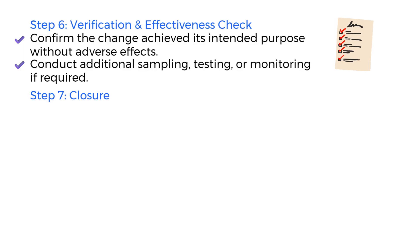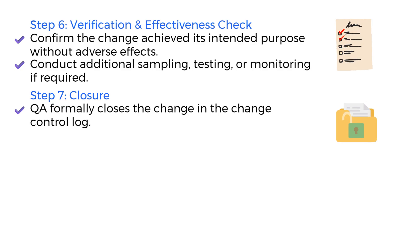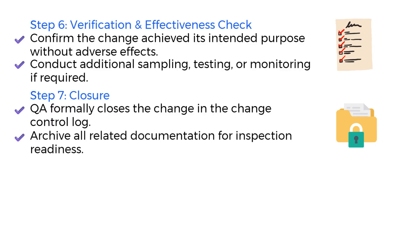Step 7: Closure. Finally, QA conducts a final review and formally closes the change. This includes confirming all steps were followed, ensuring verification data is satisfactory, and updating the change control log. All documentation must be archived, indexed, and kept readily available for regulatory inspections. Closure doesn't just mean the end of the process — it also ensures that the change is traceable and compliant.